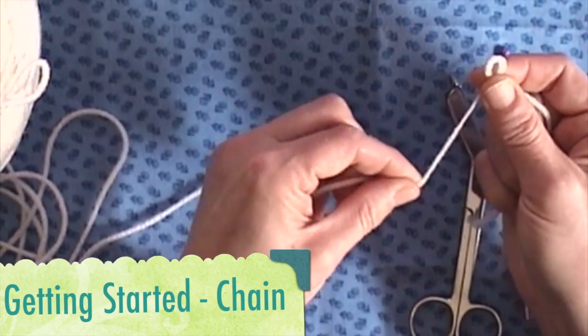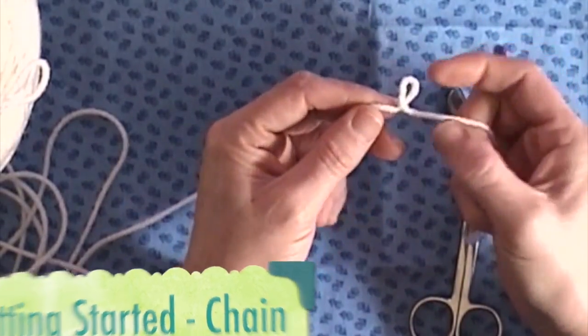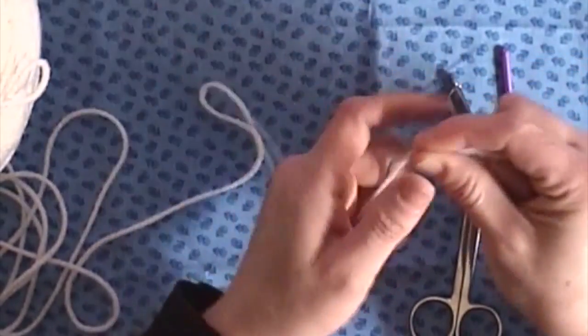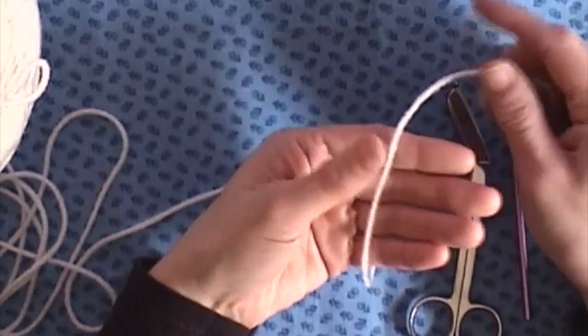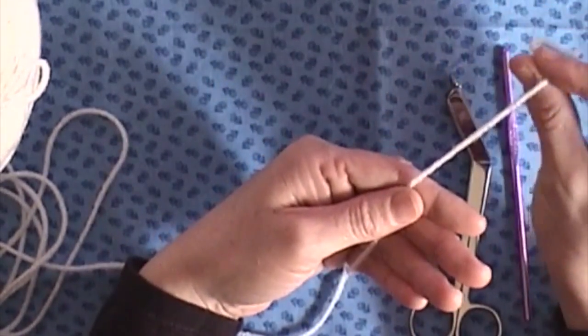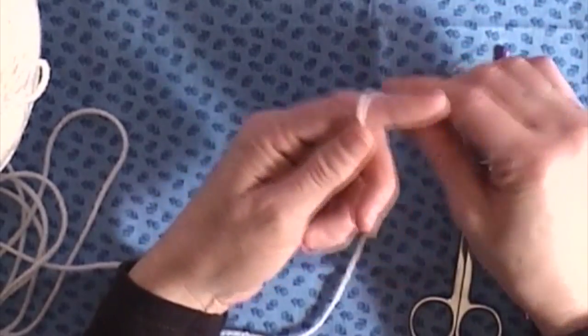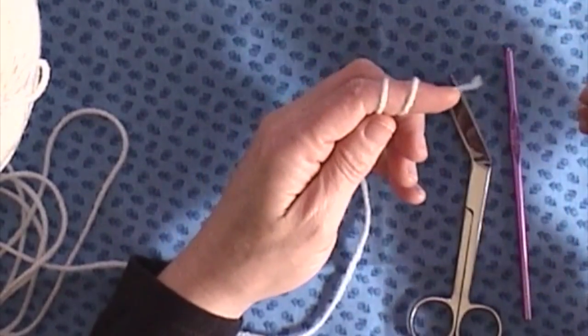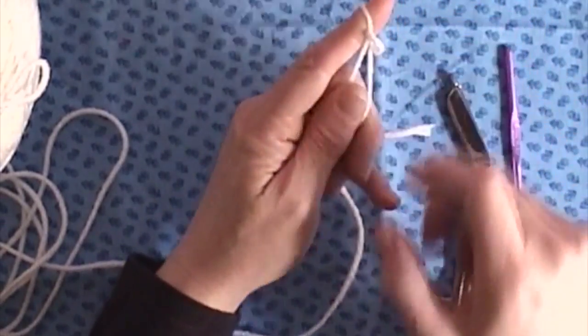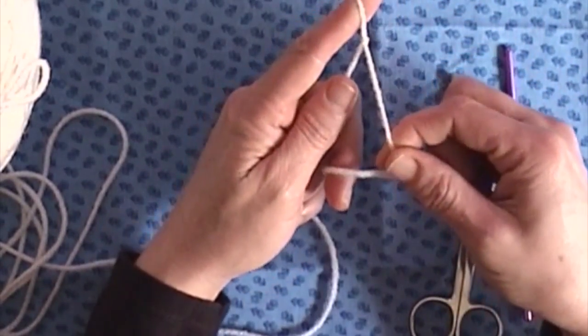So showing you that again, just hold your yarn that's attached to your ball with the tail end on the top. Wrap your yarn around your finger two times, back over the front once, back over the front twice, and off the finger, and just pull that knot.